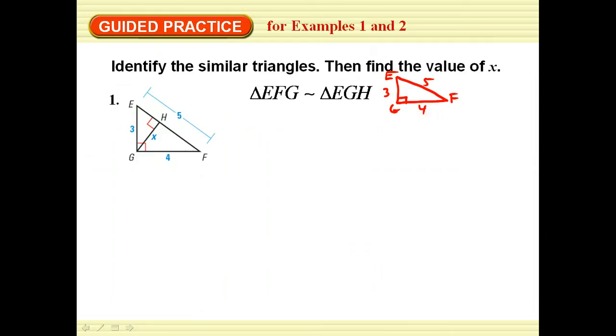And I'm using EGH, which is the small triangle here. So I've got EGH, where H is the right angle. EG is 3, and I'm looking for HG, that's X. And so I can see that X is to 4 as 3 is to 5. I can do my cross product and find out that X is 2.4.